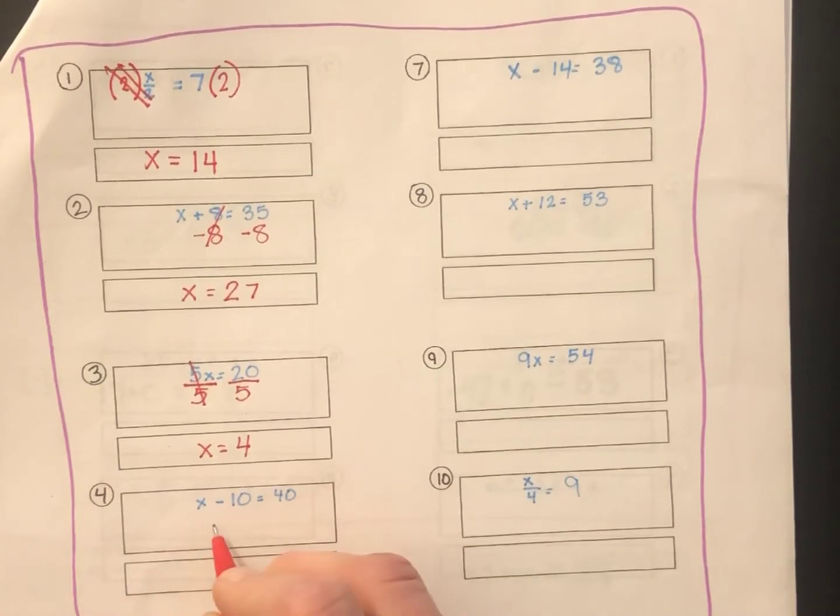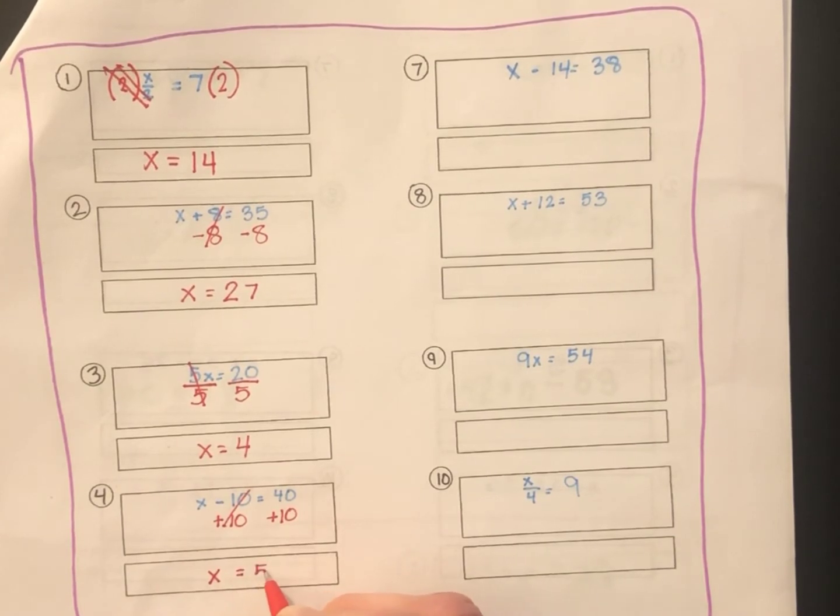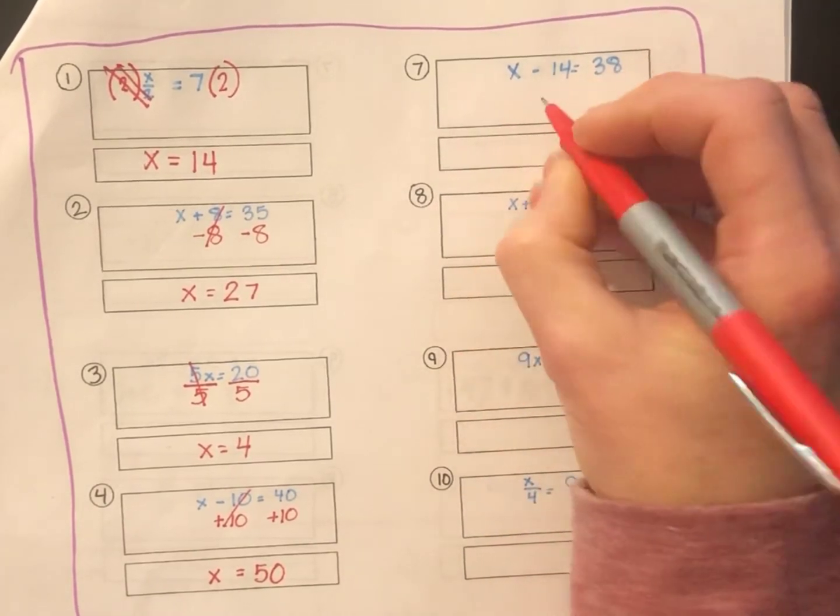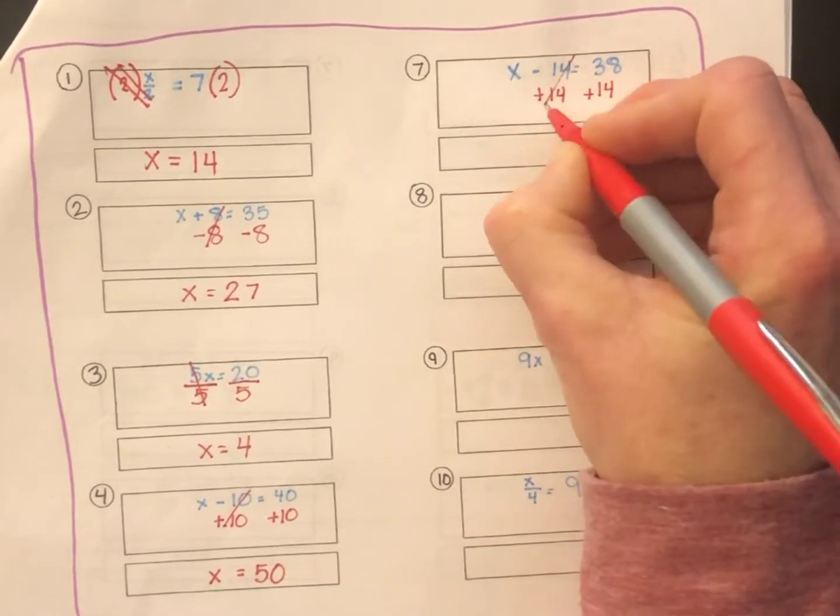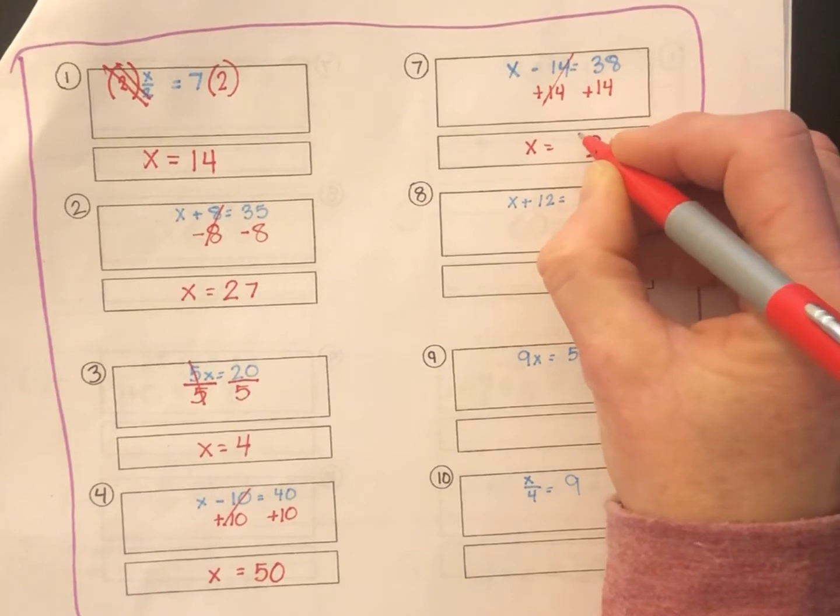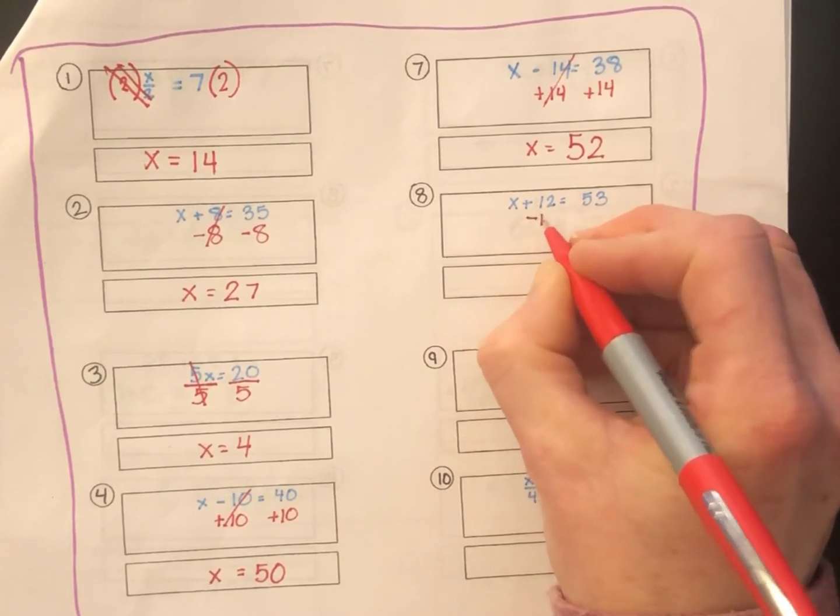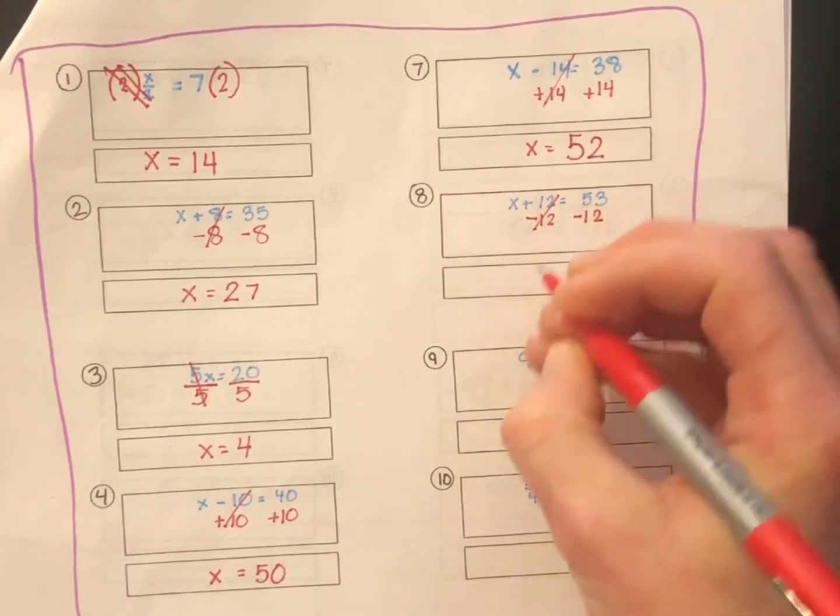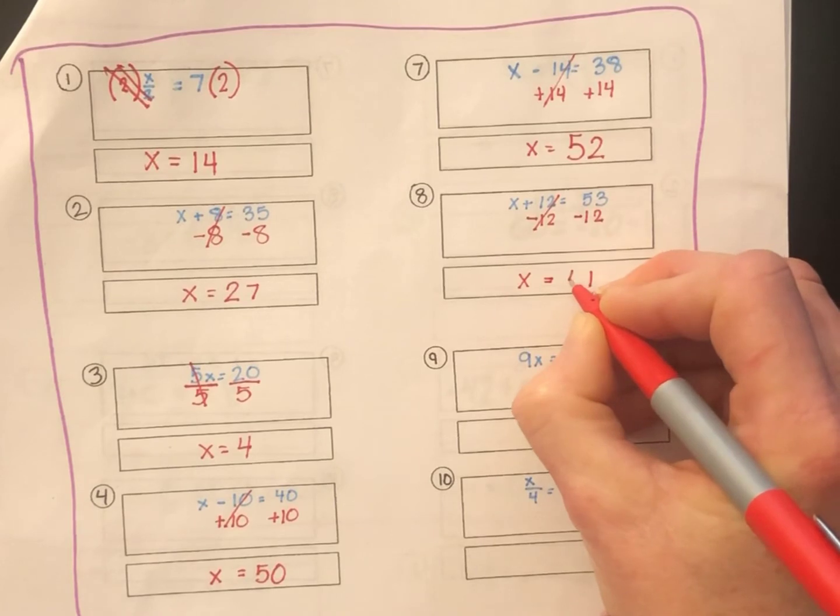Number 4, x minus 10 equals 40. The opposite of minus 10 is plus 10. I'll add 10 to both sides. The minus 10 cancels out, and I end up with x equals 50. Number 7, x minus 14. The opposite is plus 14. Add 14 to both sides, x equals 52. On to number 8, x plus 12 equals 53. Subtract 12 from both sides. x equals 53 minus 12 is 41.